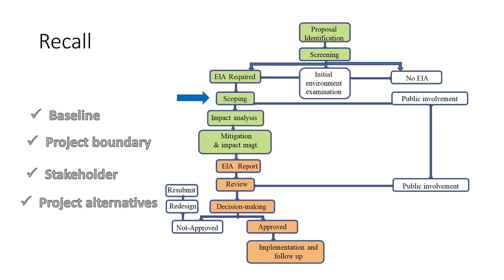There are many activities involved in the scoping process. The first is the baseline — the baseline has to be studied in any EIA project because impact assessments are compared with the baseline of that particular site. Then we moved on to project boundaries, which can be figured out in two ways: spatial boundary — what is the spatial impact of the project — and temporal boundary — how long the impact is going to exist.